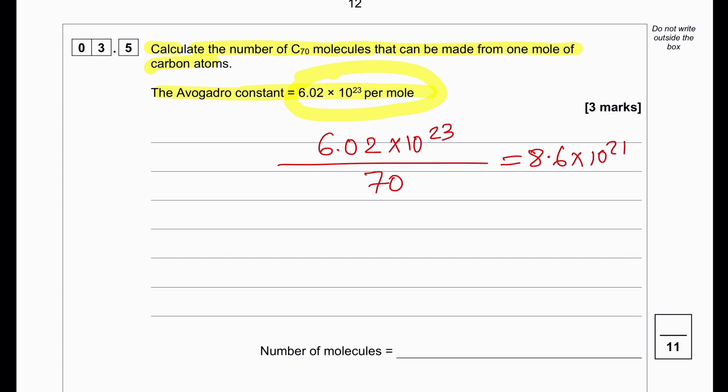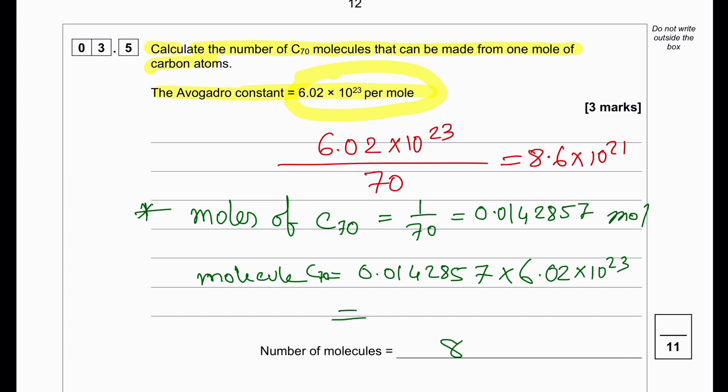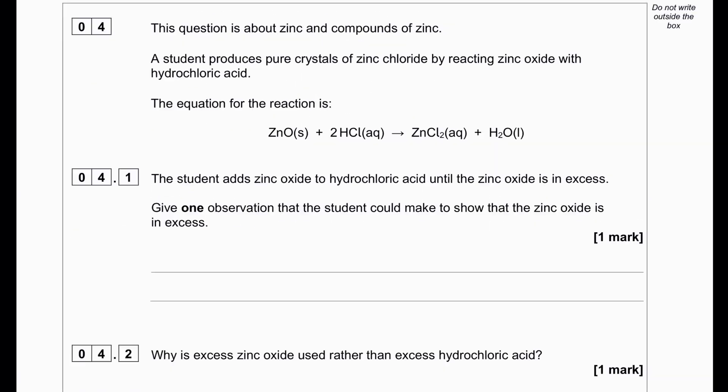Now since this particular question has three marks, there is a second method. First, we're going to find moles of C-70 from one mole of carbon: 1 divided by 70 which gives us 0.01428 moles of C-70. Now we're going to find molecules of C-70: 0.0142857 multiplied by Avogadro constant and the answer will be the same.